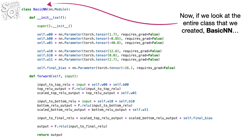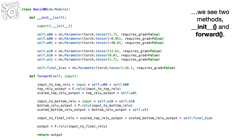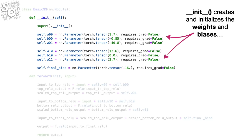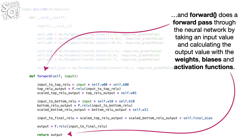Looking at the entire class BasicNN, we see two methods: init and forward. Init creates and initializes the weights and biases. Forward does a forward pass through the neural network by taking an input value and calculating the output value with the weights, biases, and activation functions.